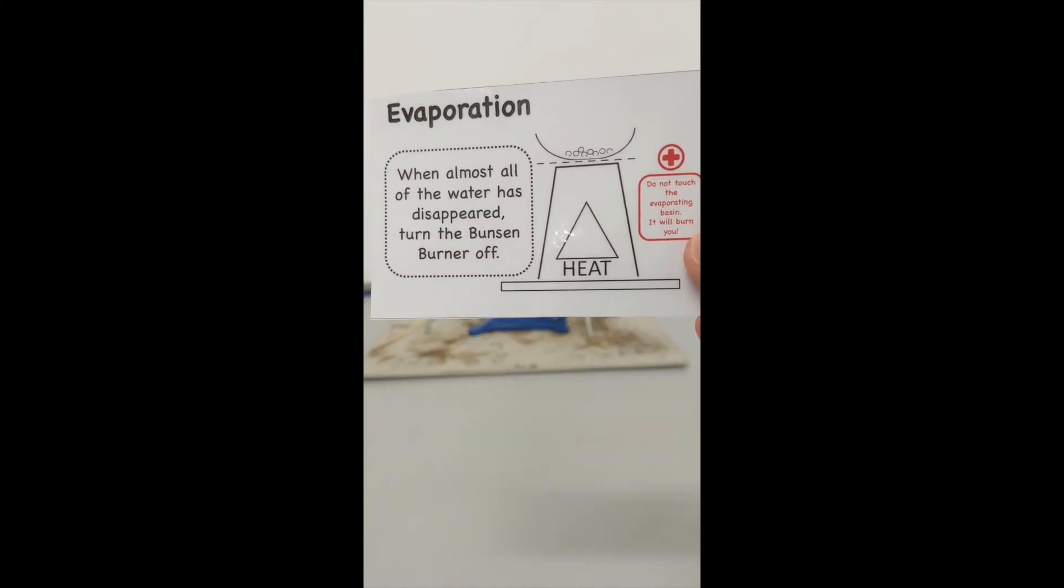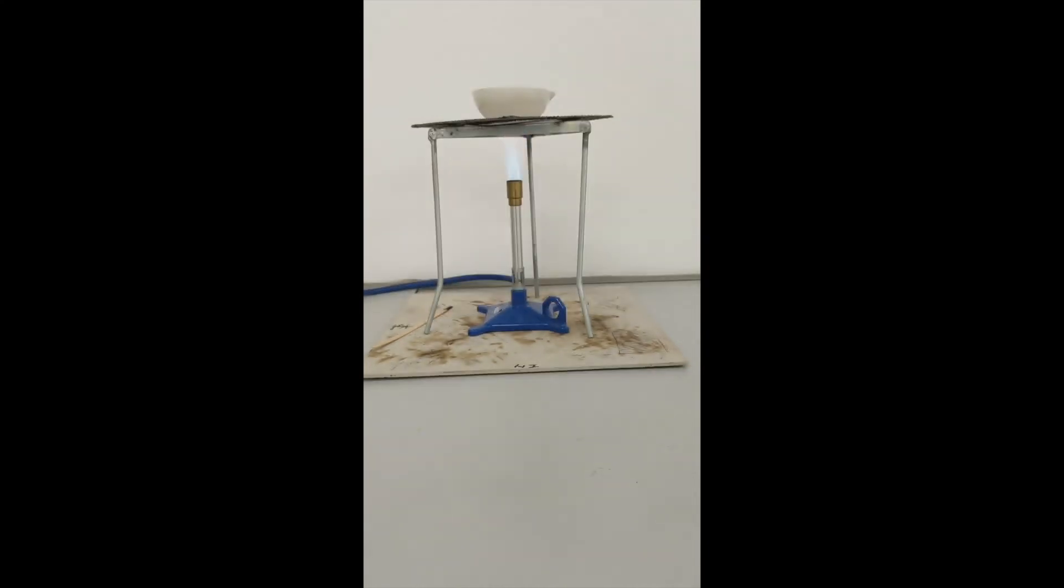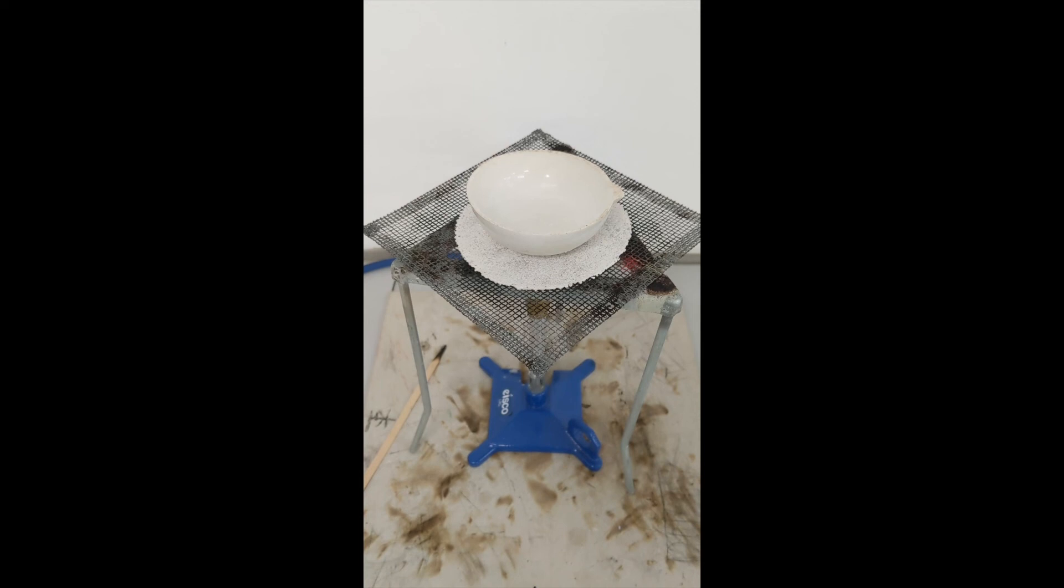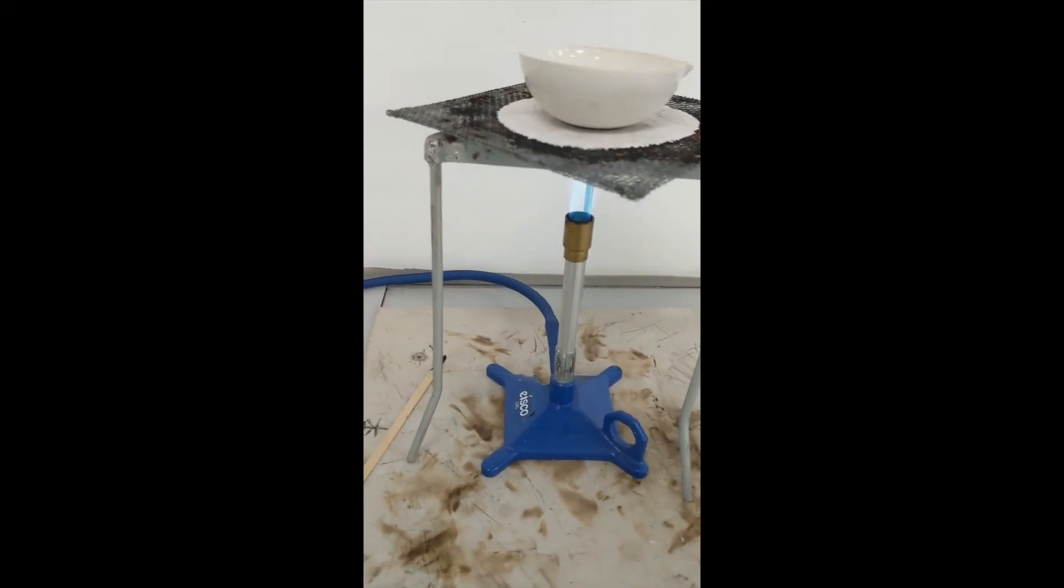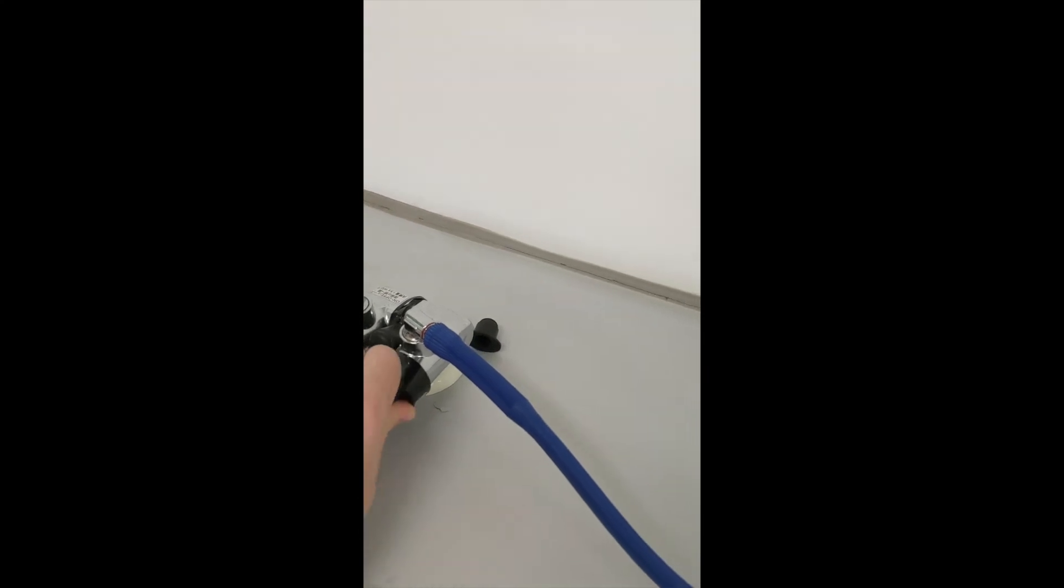When almost all of the water has disappeared, you can turn the Bunsen burner off. Turn it off at the gas tap. Almost all of the water has disappeared, so I'm going to turn the Bunsen burner off at the gas tap.